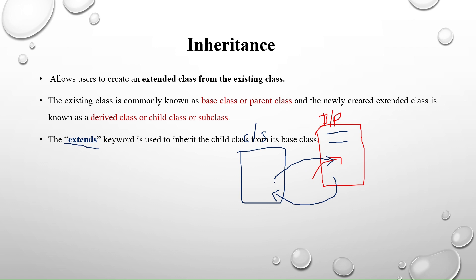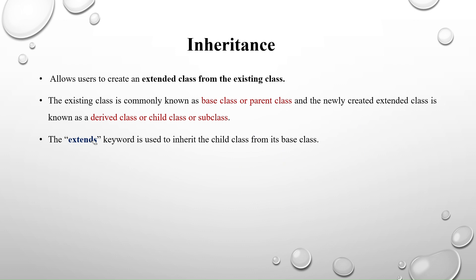Inheritance also allows you to modify the properties or methods in the base class without disturbing it. You don't have to go into the base class and change it — you can perform everything in the child class. If the base class has any property or method, you can override or modify it in the child class without touching the base class at all.